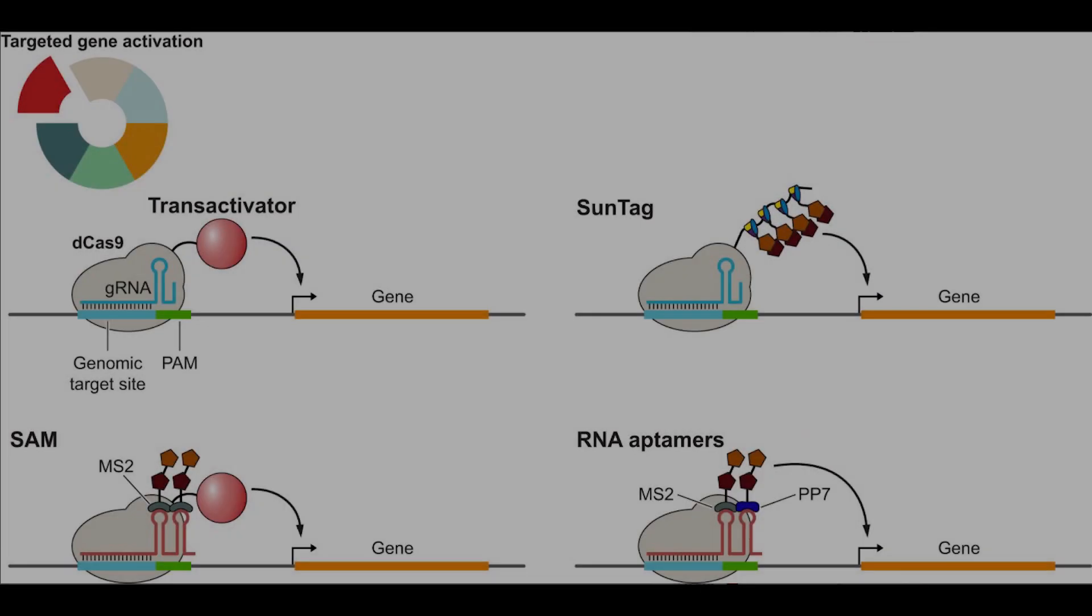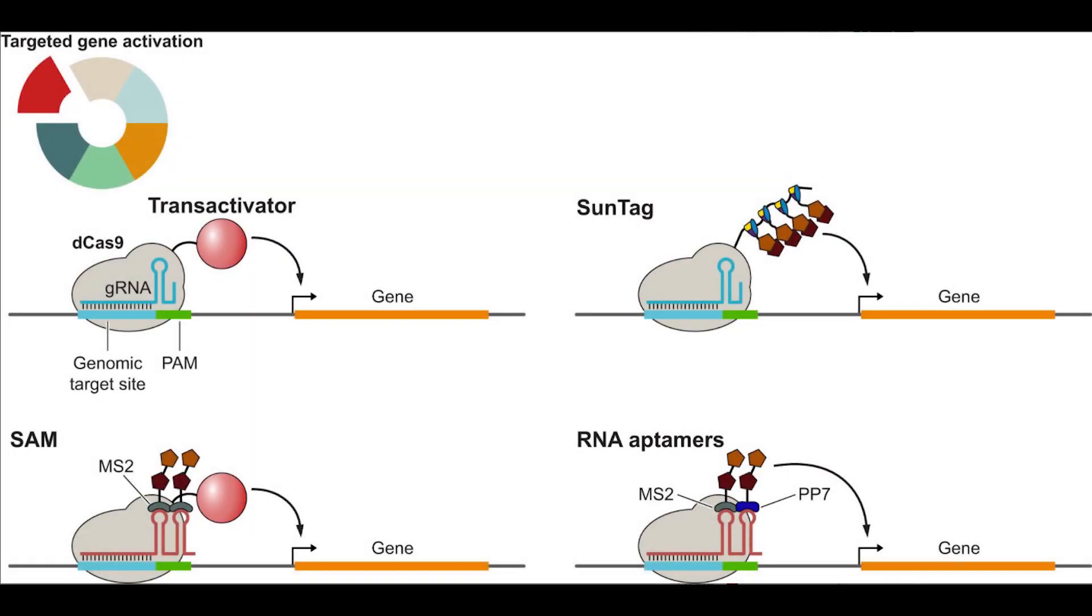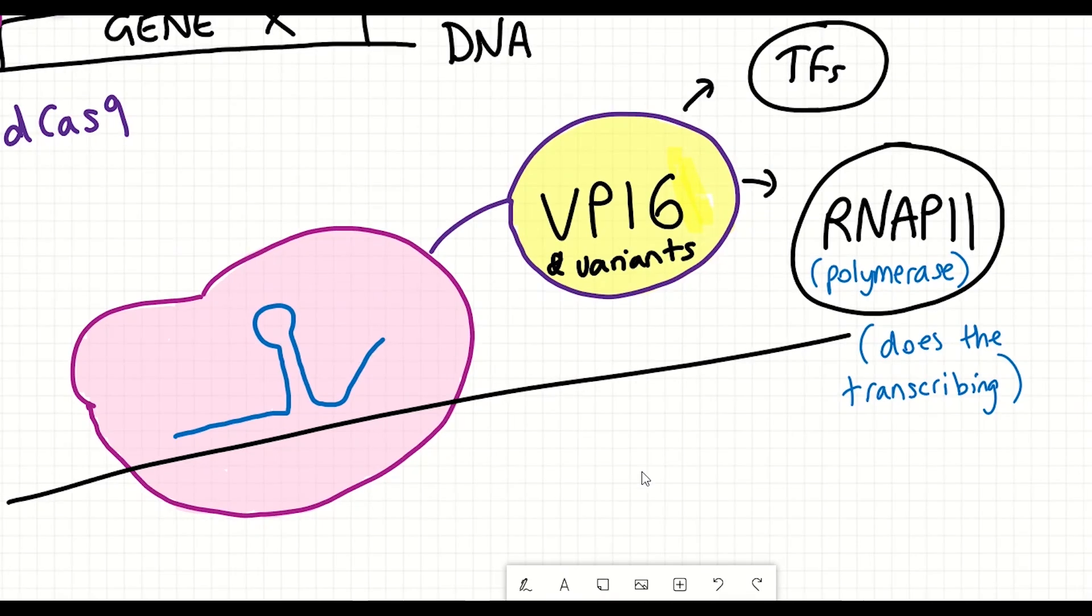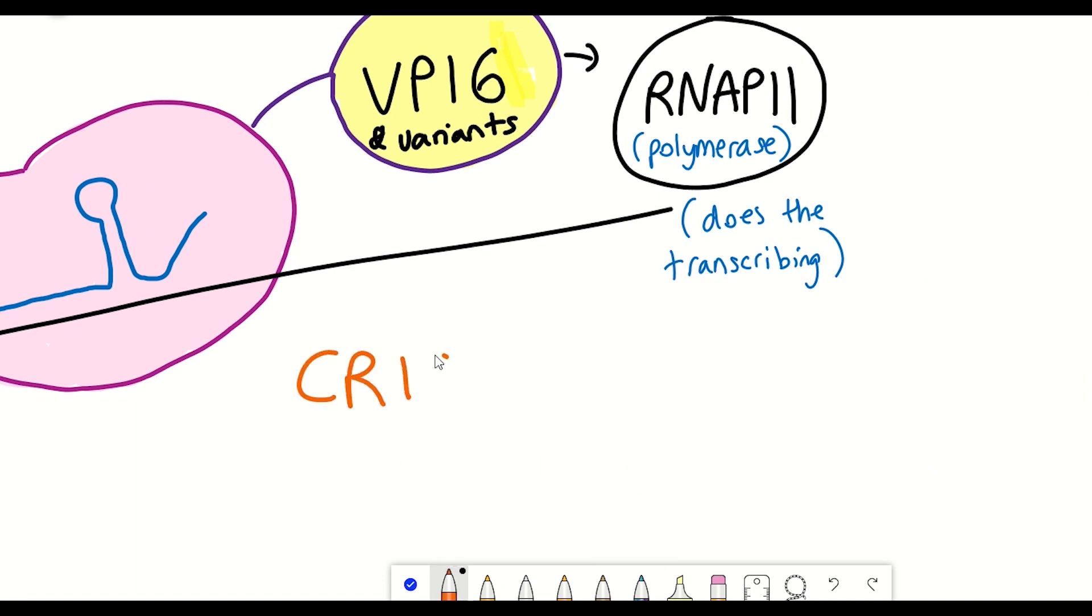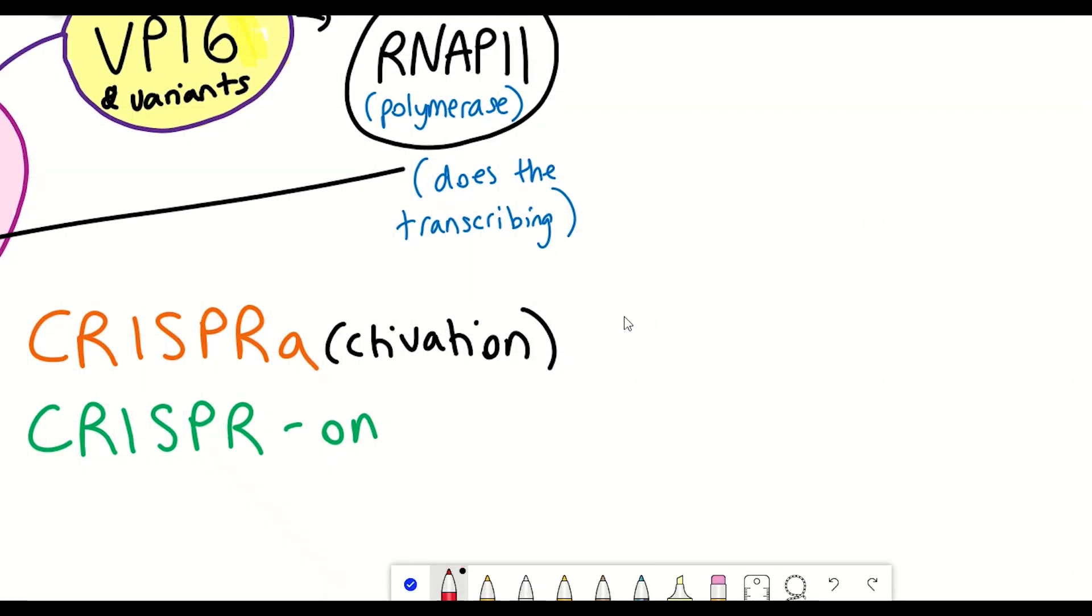And this is illustrated very nicely in these different figures here, where you can see different alternative versions of targeted gene activation strategies. And this one called Suntag is particularly interesting because we'll come back to it a little bit later. And this is interesting because you can see there's multiple multimers of VP16, which can generate more potent transcriptional activation. And so a generic term that you may come across for these different tools are CRISPR-A for CRISPR activation, or CRISPR-ON for any turning gene expression on, I guess.